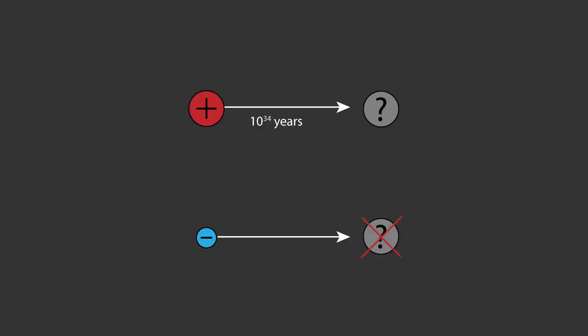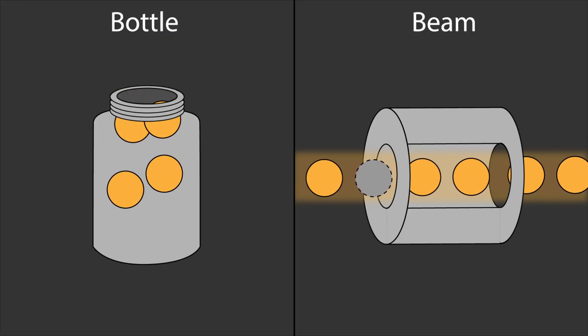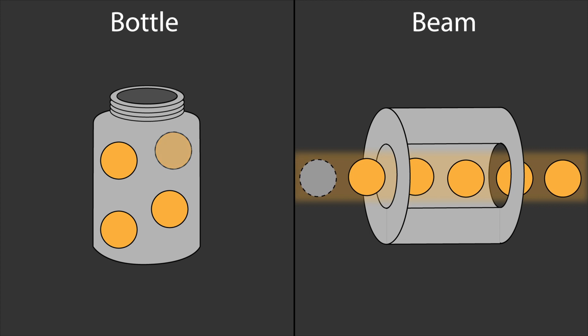Nonetheless, neutrons do decay quite quickly, and they seem to not always decay in the same way. Currently there are two different methods for measuring the lifetime of a neutron: the bottle method and the beam method.